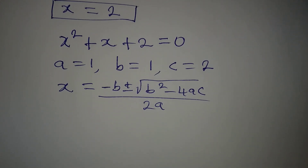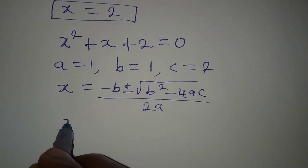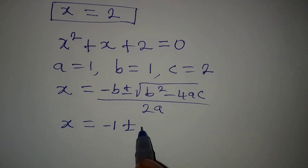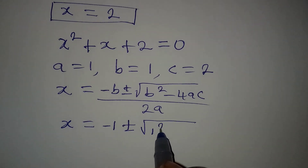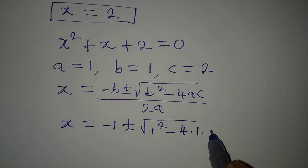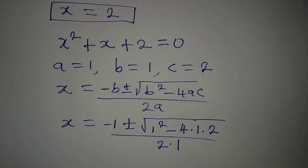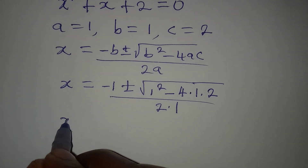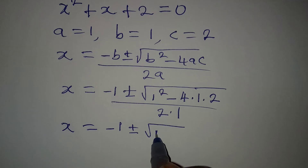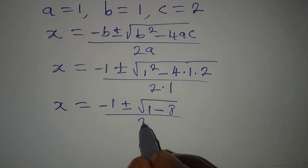Substituting the values, x equals minus 1 plus or minus the square root of (1 squared minus 4 times 1 times 2), over 2 times 1. This gives x equals minus 1 plus or minus the square root of (1 minus 8), over 2.